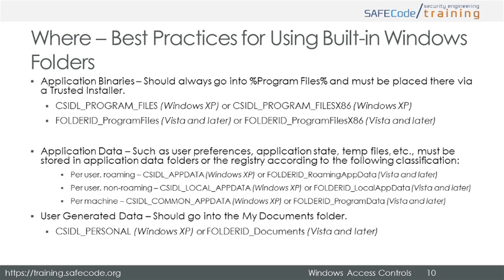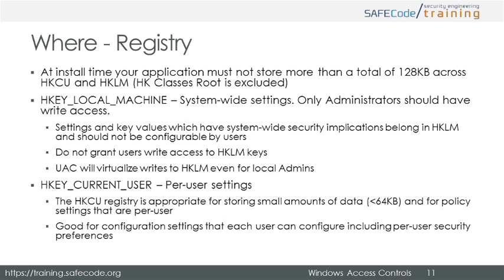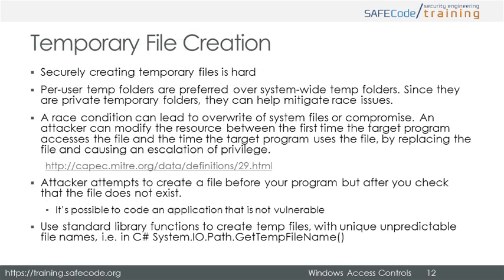Do not store anything in the system temporary folder if possible. During installation, your application must not store more than a total of 128K across HKCU and HKLM. For the registry, do not store any user-configurable settings in HKEY local machine. Instead, store configurable settings in HKEY current user. Since the ACL inherited from Windows does not grant write access to users, there's probably a good reason why your app shouldn't either. Do not grant users write access to HKLM keys. It is appropriate to store small amounts of data, such as less than 64K, in the HKCU registry. It is also appropriate to store per-user policy settings or security preferences there.